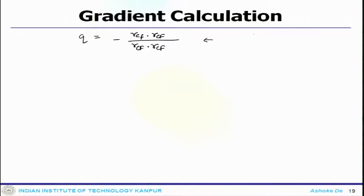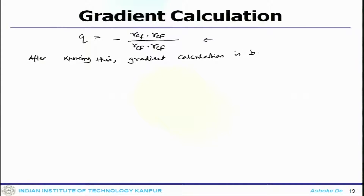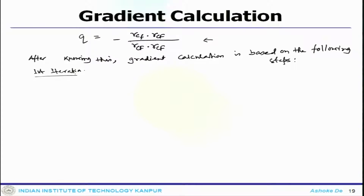Once you know the Q value, the gradient calculation follows. For the first iteration, you calculate the gradient over the whole domain. First, you calculate Rf prime using the equation: Rf prime equals Rc minus (Rcf dot Rcf divided by Rcf dot Rcf) times (Rc minus Rf).